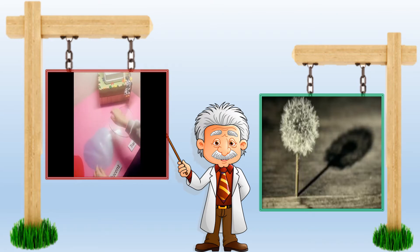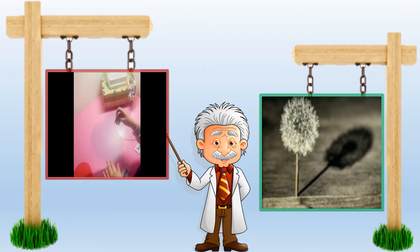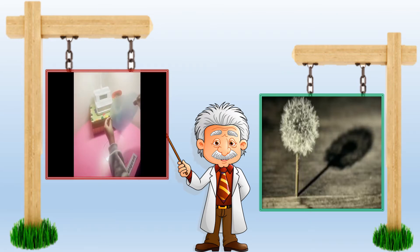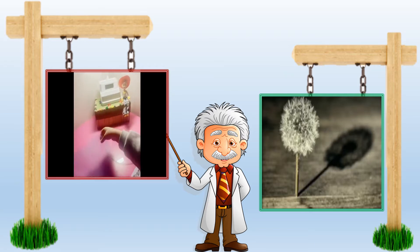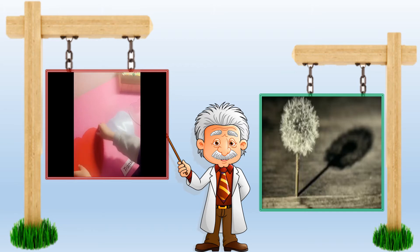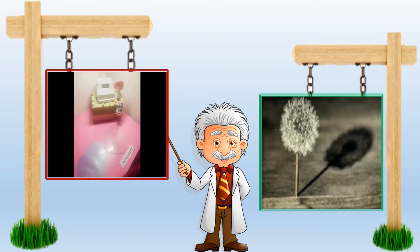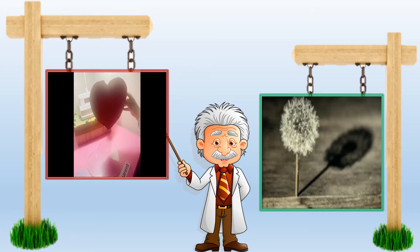Second thing: translucent materials. I can see a stroke down, but not clearly. Finally, opaque materials — I cannot see through them.